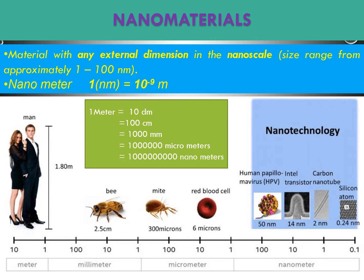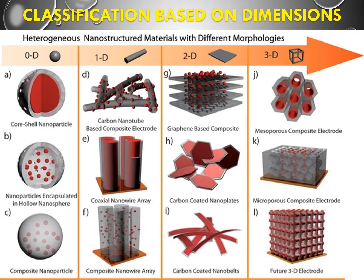Our naked eye has the ability to see objects which have dimensions up to micrometers, but below micrometers we are unable to see objects with our naked eye — we need special instruments. Materials which have dimensions less than 100 nanometers, and the designing, preparation, and utilization of these materials, is called nanotechnology.